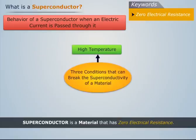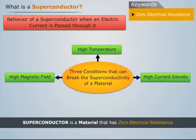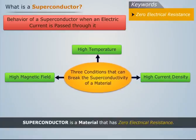Thus, high temperature, high magnetic field and high current density are the three conditions that can break the superconductivity of a material.